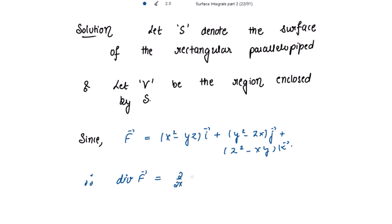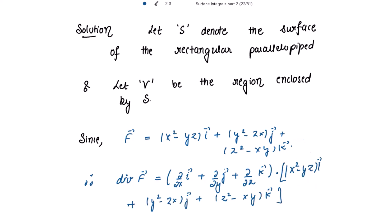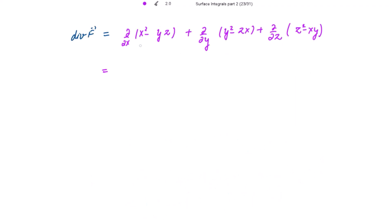The divergence of F is the dot product of del with F-vector: ∂/∂x(x² - yz) + ∂/∂y(y² - zx) + ∂/∂z(z² - xy). Differentiating, we get 2x + 2y + 2z, which simplifies to 2(x + y + z).